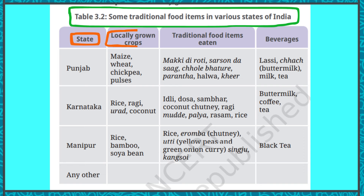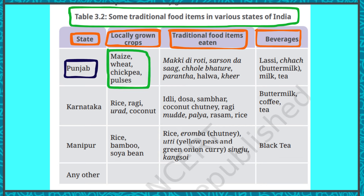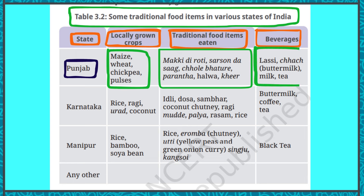For Punjab: locally grown crops are maize, wheat, chickpea, and pulses. Traditional food items include makki di roti, sarson da saag, chole bhature, paratha, halwa, and kheer. Beverages include lassi, chaach (buttermilk), milk, and tea. For Karnataka: crops are rice, ragi, urad, and coconut. Traditional food includes idli, dosa, sambar, coconut chutney, ragi mudde, palya, rasam, and rice. Beverages are buttermilk, coffee, and tea.